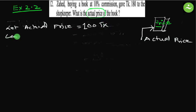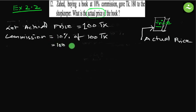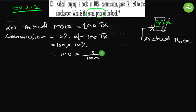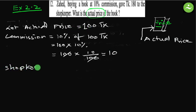Commission equals 10 percent of 100 taka, which means 100 multiplied by 10 divided by 100. Simplify — 100 and 100 cancel — so commission is 10 taka when actual price is 100 taka. Therefore, shopkeeper gets 100 minus 10, equals 90 taka.